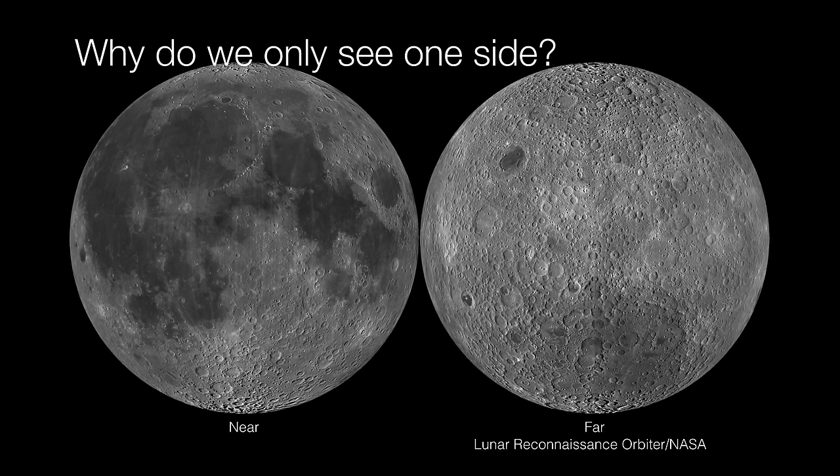So the question now is why do we only see one side? We will eventually learn that this all has to do with something called tidal forces. But practically, what does it mean to only see just one side of the moon?